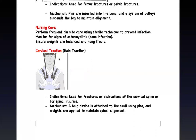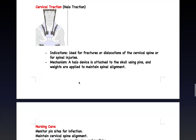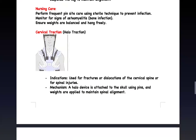Cervical traction — the Halo device — is skeletal traction used for cervical spine fractures. A pin goes through the skull and weights are attached to keep the spine in line. This is long-term stabilization. As a nurse, you should have a wrench available to adjust the device, but you don't manipulate it yourself. Teach the patient how to wear a shirt under the brace. Check for infection, proper alignment, and monitor swallowing and breathing — the brace goes through the chest and can affect breathing.